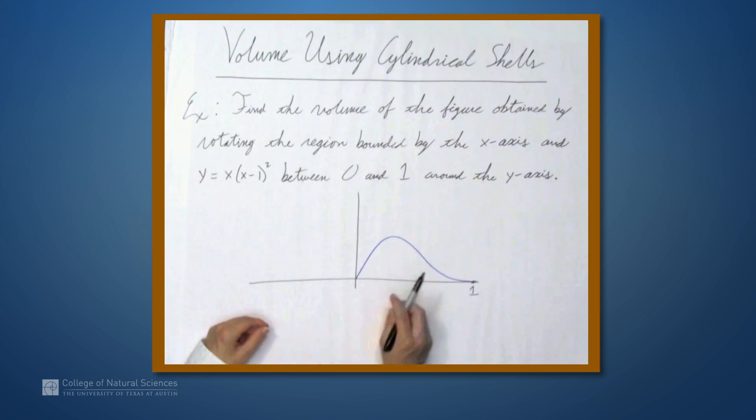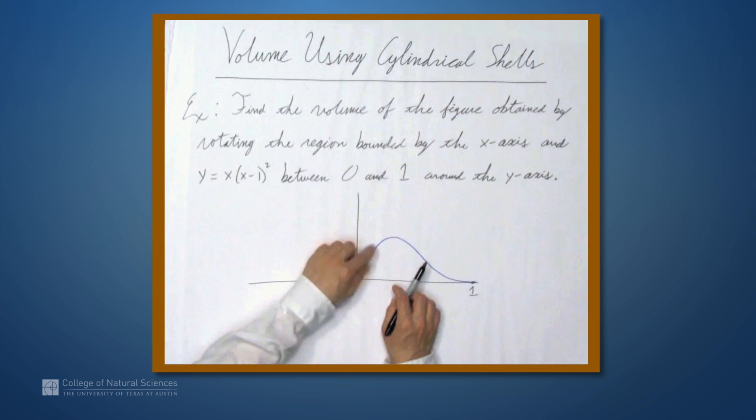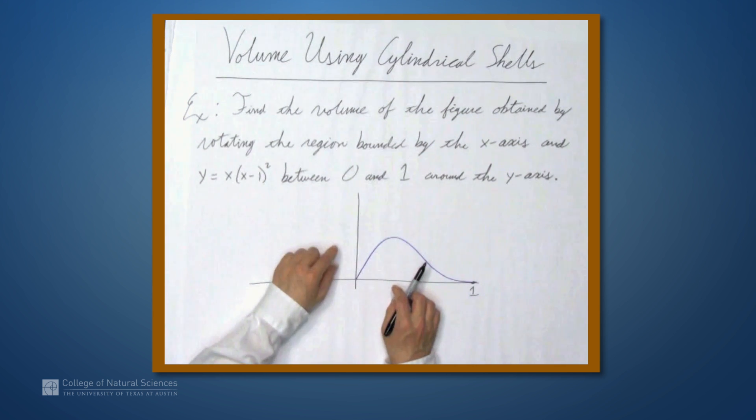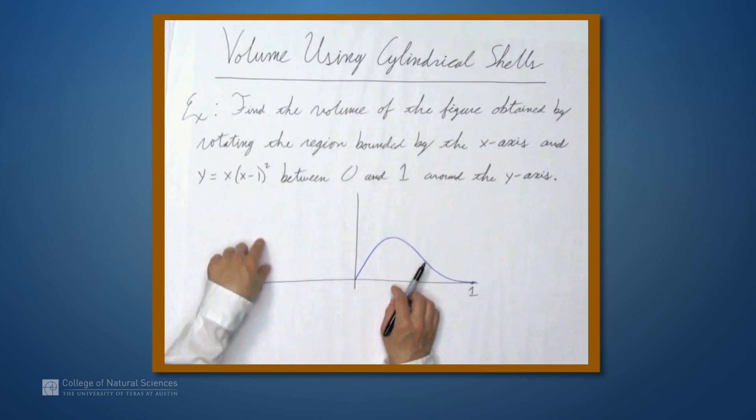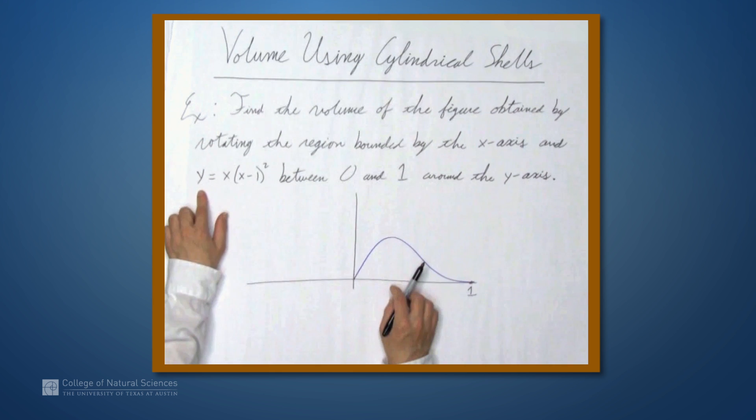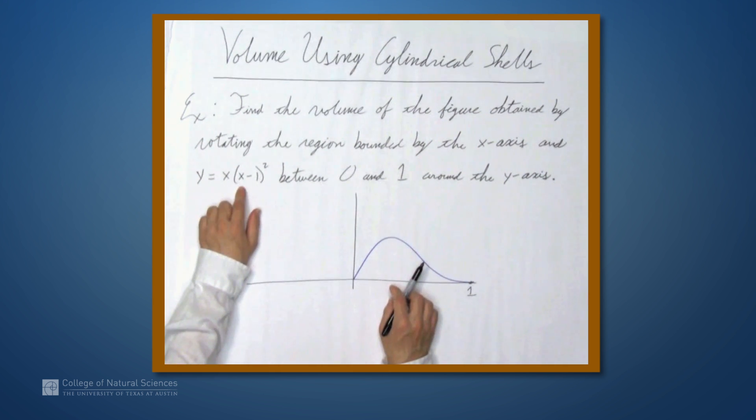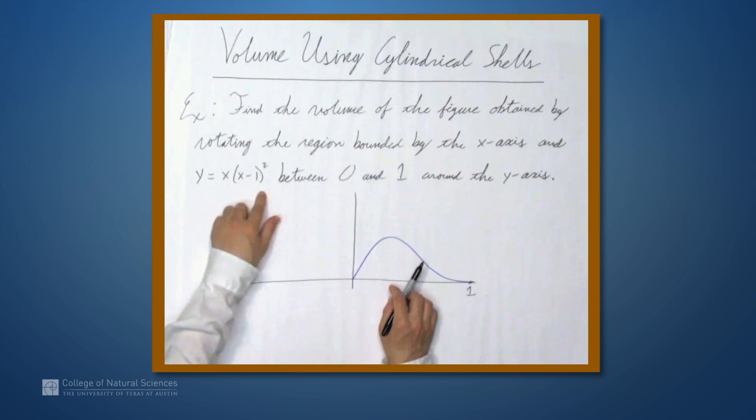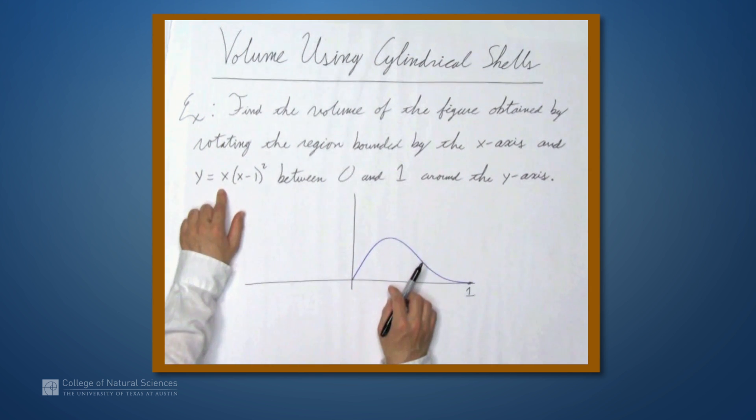Well, there are two problems with that. One is that when we rotate it around the y-axis, we're going to get an integral in terms of y. We're going to integrate in terms of y, so something-something dy. Well, that means that we're going to have to solve for x in this equation. This is a third-degree polynomial, and so solving for x is going to be difficult, if not impossible.